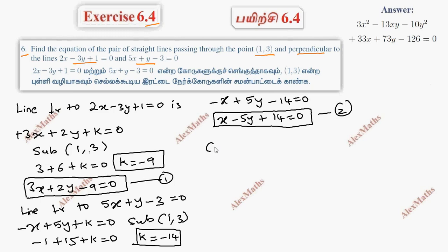The combined equation is equation 1 times equation 2, so (3x plus 2y minus 9) times (x minus 5y plus 14) equals 0.